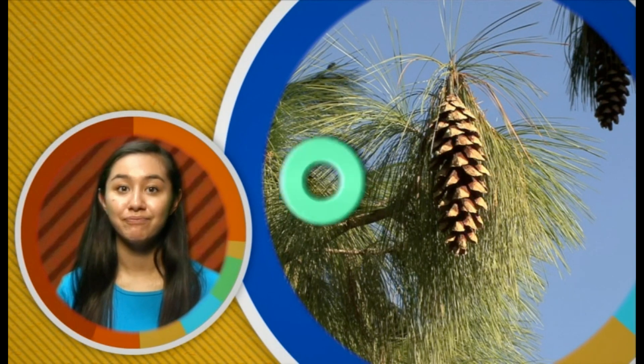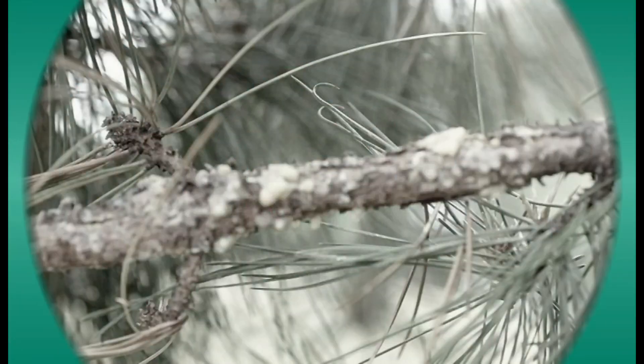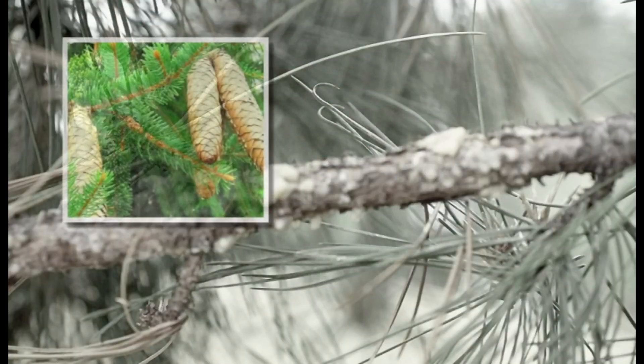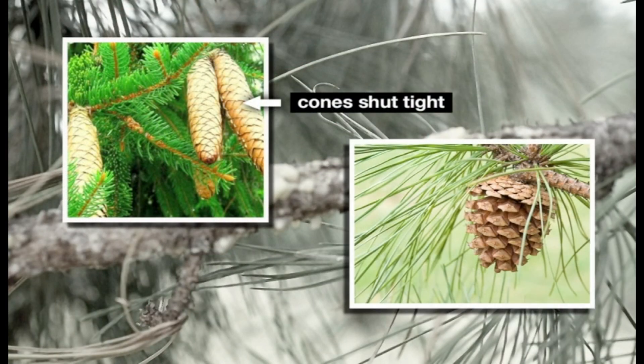Did you know that some plants don't have flowers at all? They form seeds inside cones. Pine trees and fir trees are two kinds of plants that have cones instead of flowers. At first, cones are shut tight until the seeds have developed. Then the cone opens, allowing the seeds to fall to the ground so they can begin to grow.